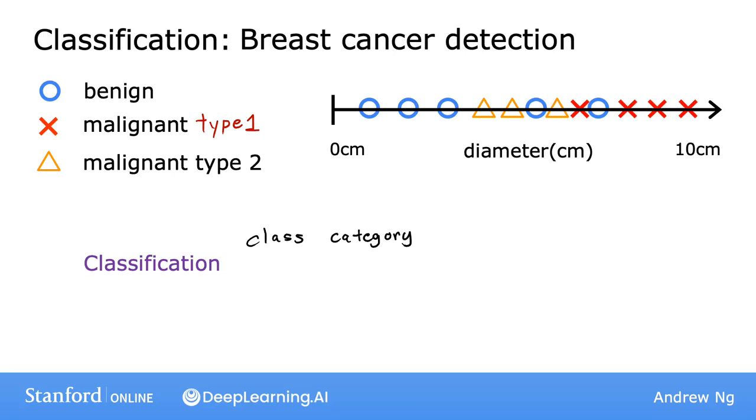So to summarize, classification algorithms predict categories. Categories don't have to be numbers, it could be non-numeric. For example, it can predict whether a picture is that of a cat or a dog. And it can predict if a tumor is benign or malignant. Categories can also be numbers like 0 or 1 or 0 or 1 or 2.